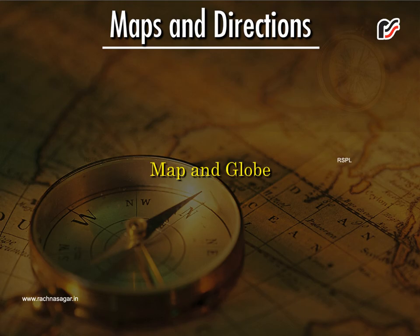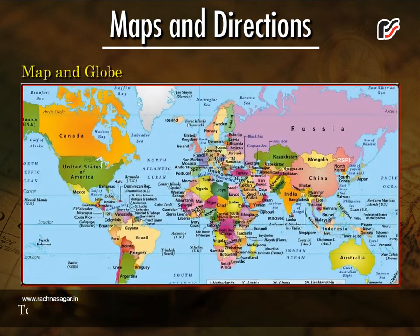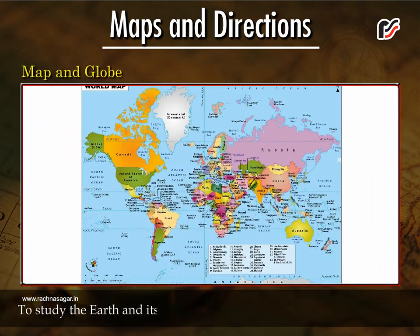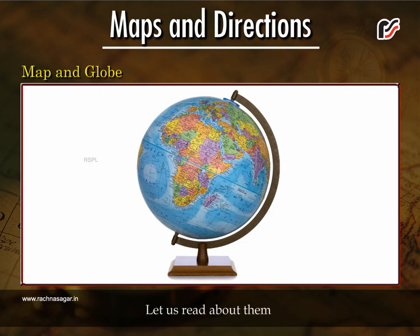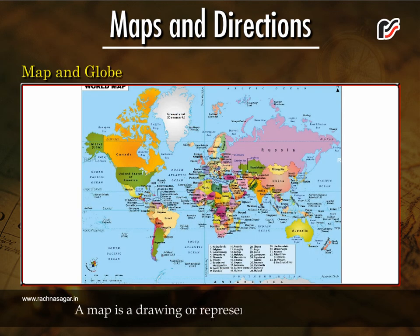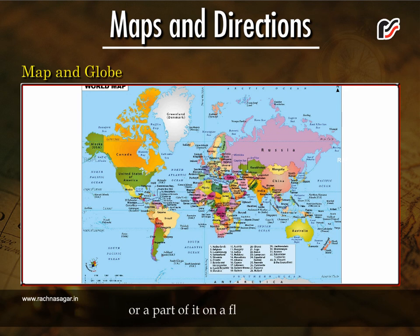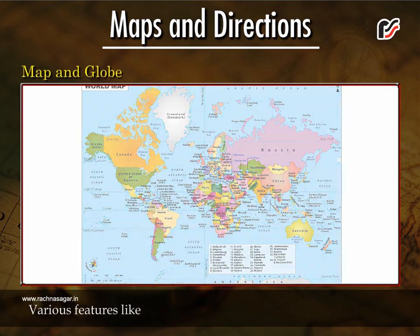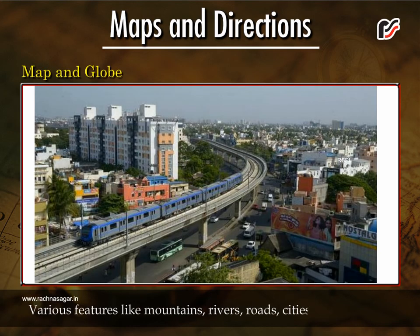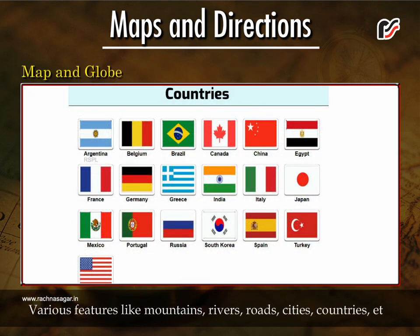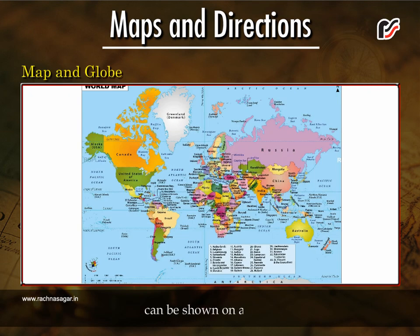Map and Globe. To study the earth and its different features, we use a map and a globe. A map is a drawing or representation of the earth or a part of it on a flat surface. Various features like mountains, rivers, roads, cities, countries, etc. can be shown on a map.